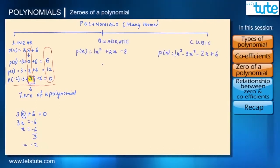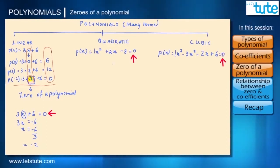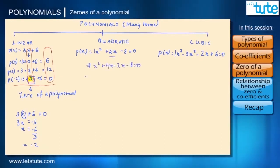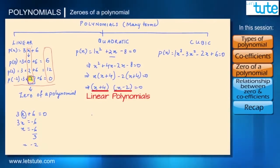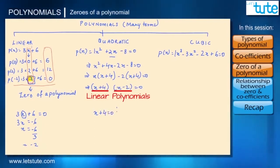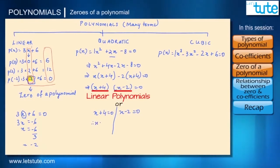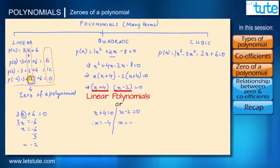In the same way, we can find zeros for any polynomial by equating it with 0. Let's find zeros for this quadratic polynomial. What we've done is we've got this in terms of linear polynomials — two linear polynomials: x + 4 = 0 or x − 2 = 0. Therefore, x = −4 or x = +2.